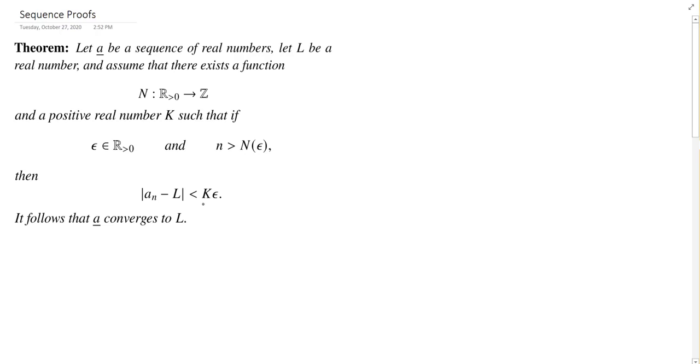And the claim is that if this is true, then A still converges to L. There will be a way to go back and rewrite it so that it's less than epsilon. So as long as you can show it's less than some k epsilon, then it will be less than epsilon if you rewrite your proof.